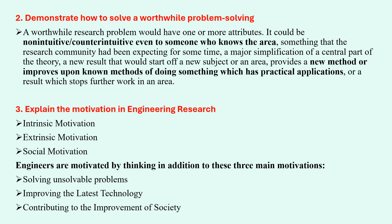The third question is: explain the motivation in engineering research. There are three types of motivation: intrinsic, extrinsic, and social motivation. Intrinsic motivation is doing research out of your own interest to achieve something. Extrinsic motivation is research done because of peer pressure or others' pressure. Social motivation is doing research to gain financial benefits. Engineers are motivated by three main goals: how to solve unsolvable problems, how to improve the latest technology, and how to contribute that technology and science to society.